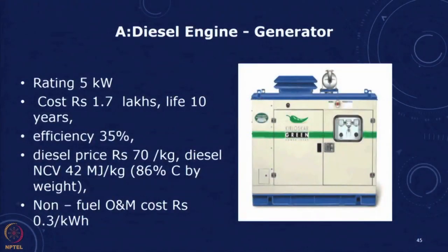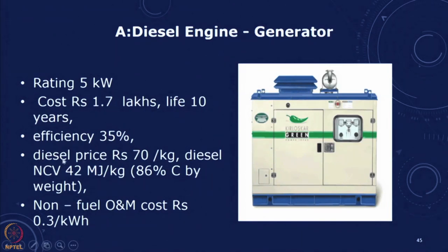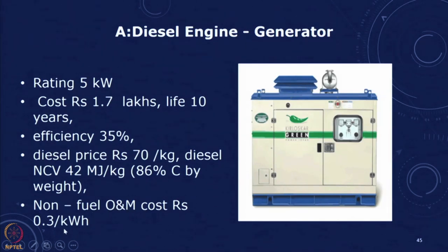For Option A — a diesel engine with a 5 kW rating — the capital cost is ₹1.7 lakhs, life is 10 years, efficiency is 35%, diesel price is ₹70 per kg, net calorific value of diesel is approximately 42 MJ/kg, carbon content is 86% by weight, and non-fuel O&M cost is 30 paise per kilowatt hour generated.